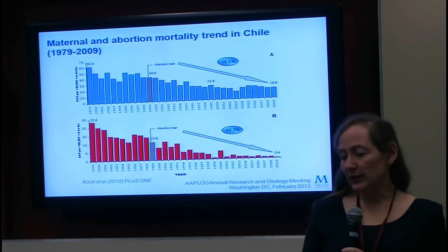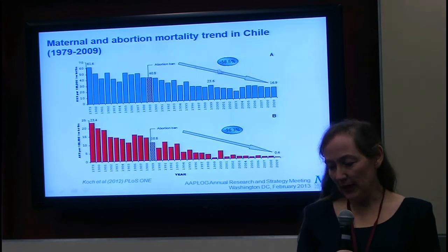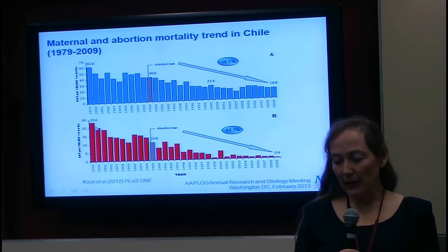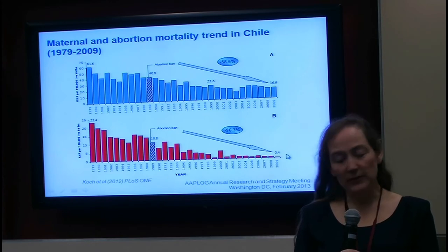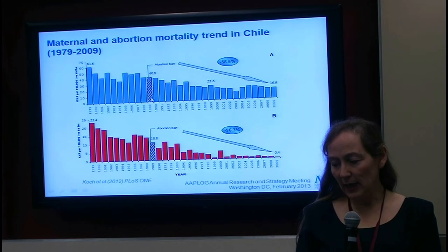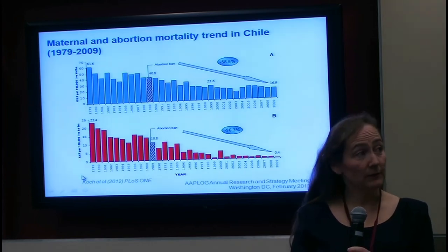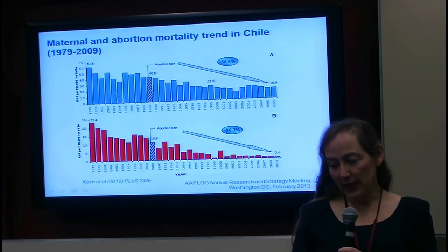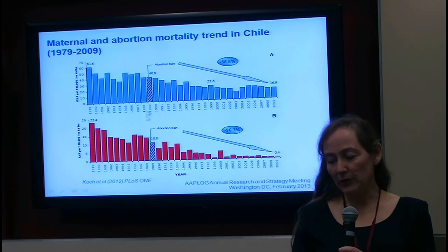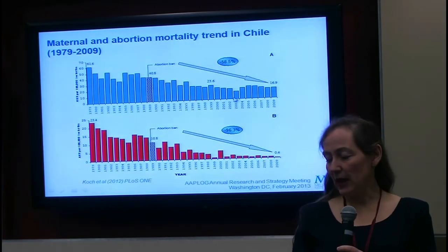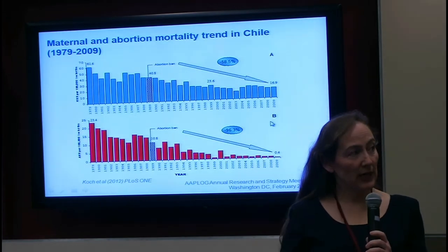They showed that both maternal mortality and abortion-related mortality in Chile decreased from 1979 to 2009. As you recall, 1989 is when abortion was banned in Chile, so the period prior to 1989 represents the time when abortion was legal. Banning abortion did not cause a subsequent increase in abortion-related mortality or maternal mortality — which was the hypothesis used to pressure nations into legalizing abortion.